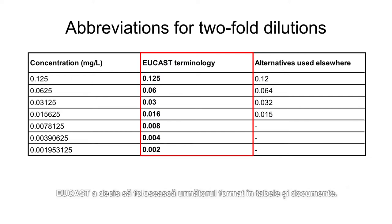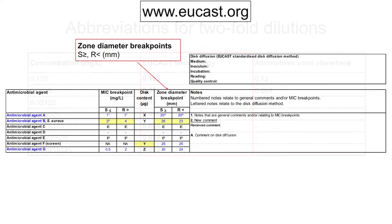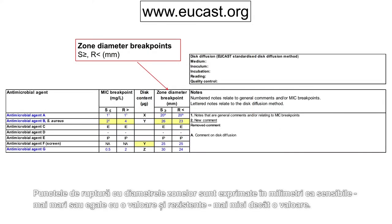EUCAST has decided to use a specific format in tables and documents. Some diameter breakpoints are expressed in mm as susceptible, greater than or equal to a value, and resistant, less than a value.